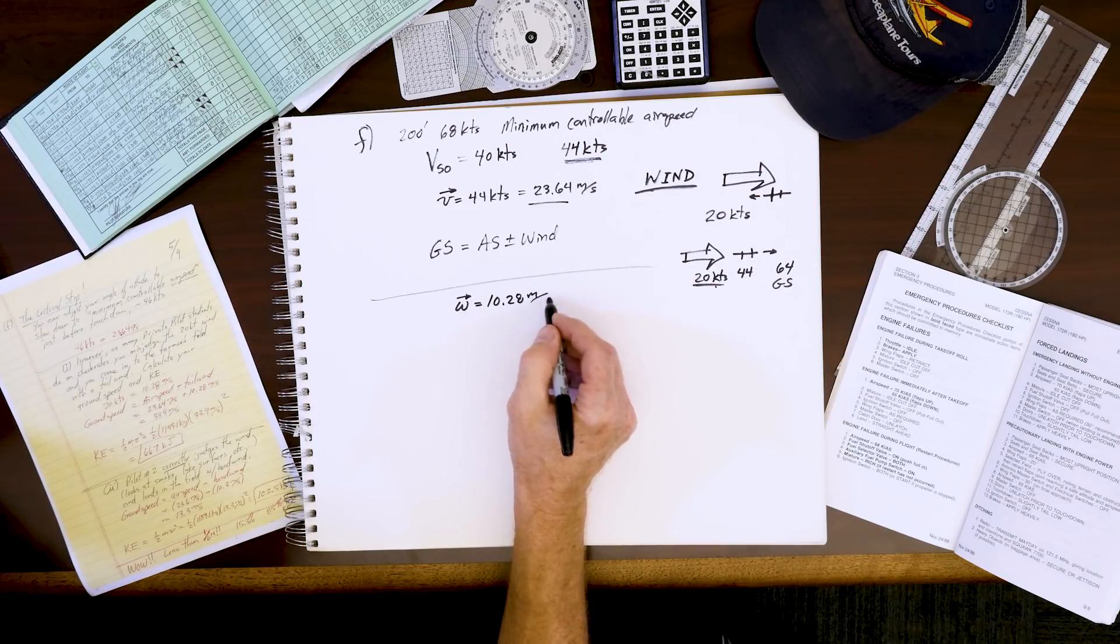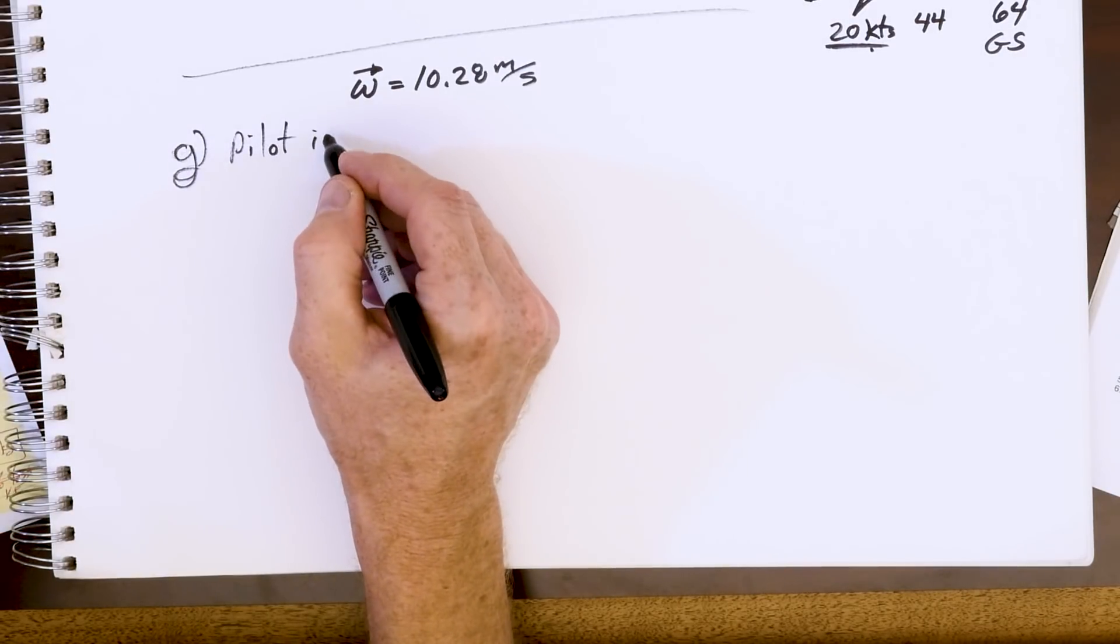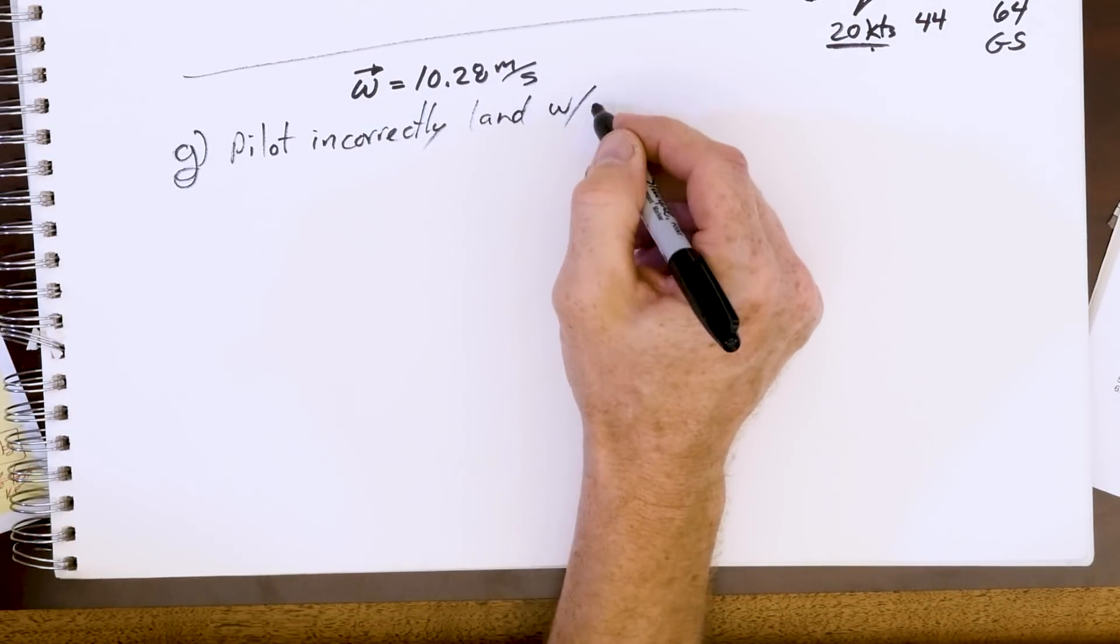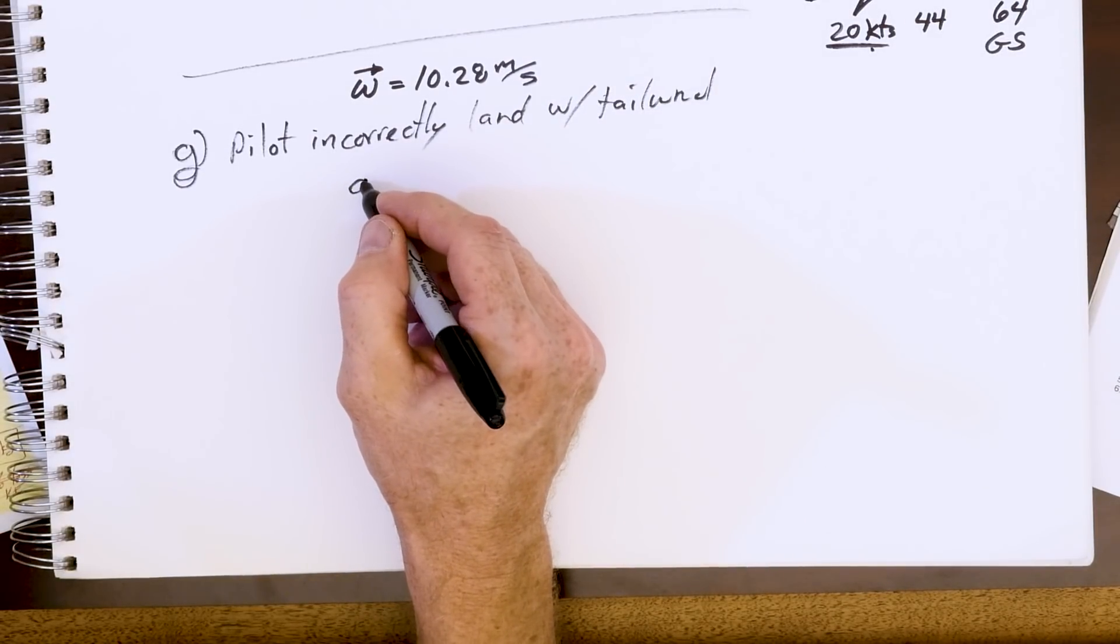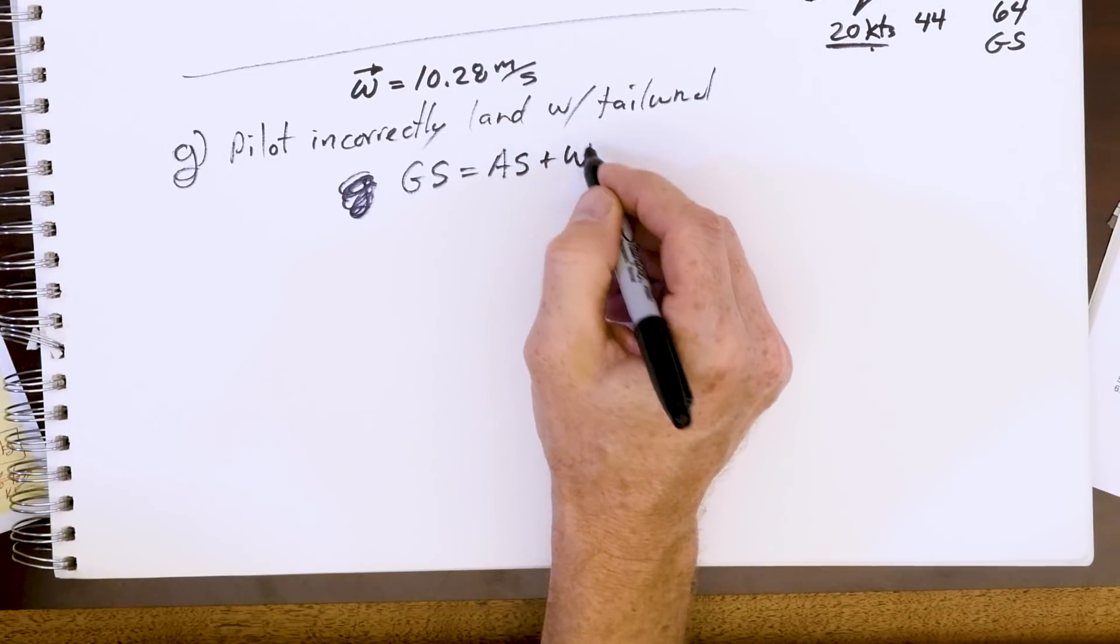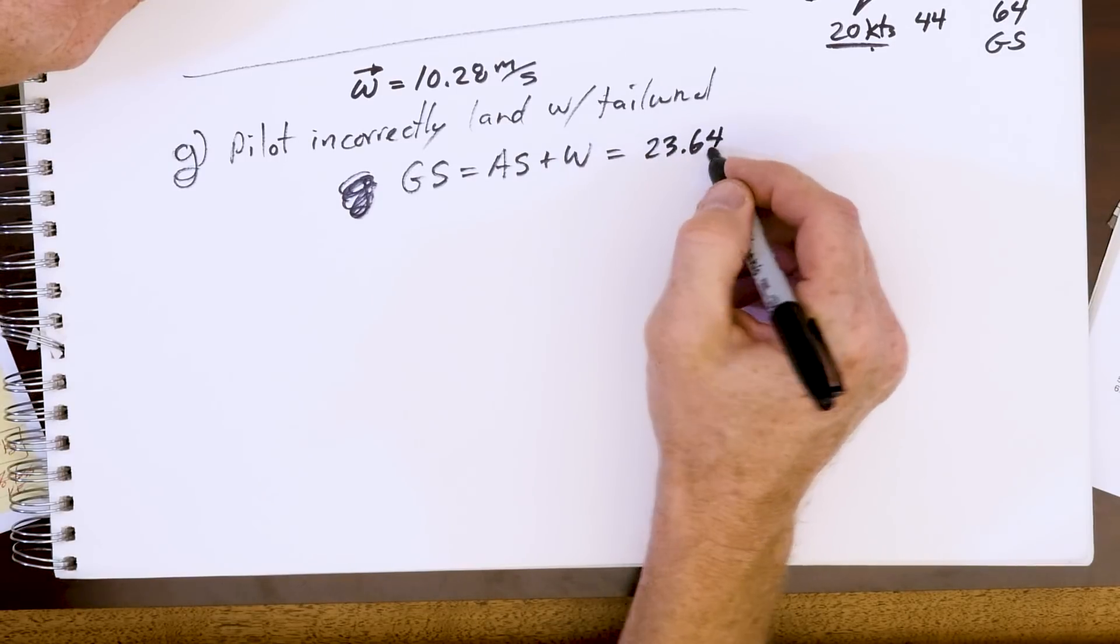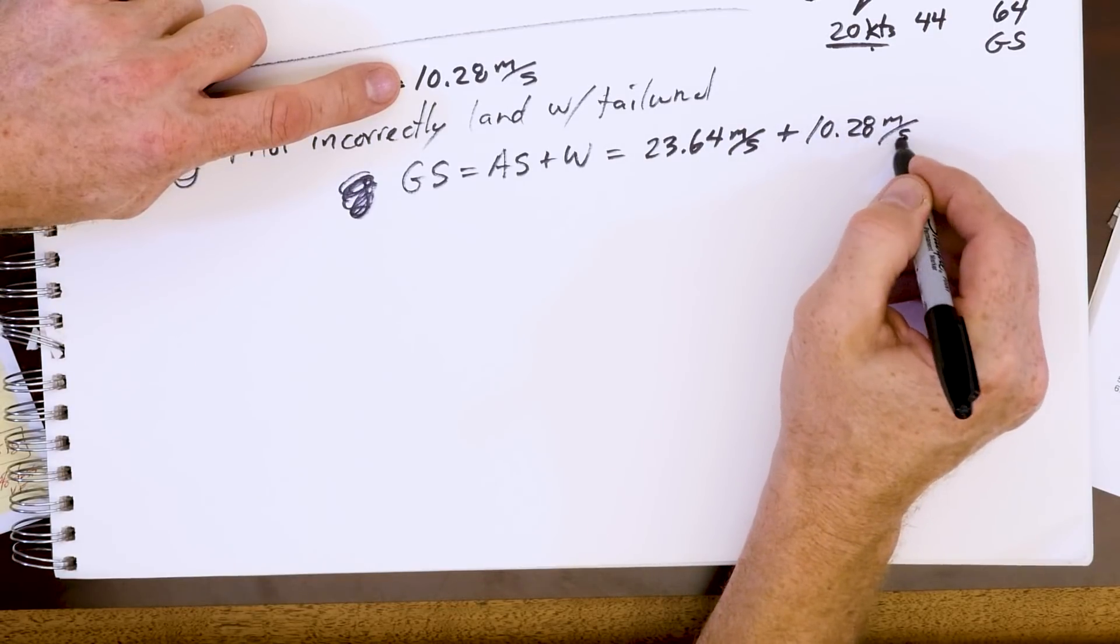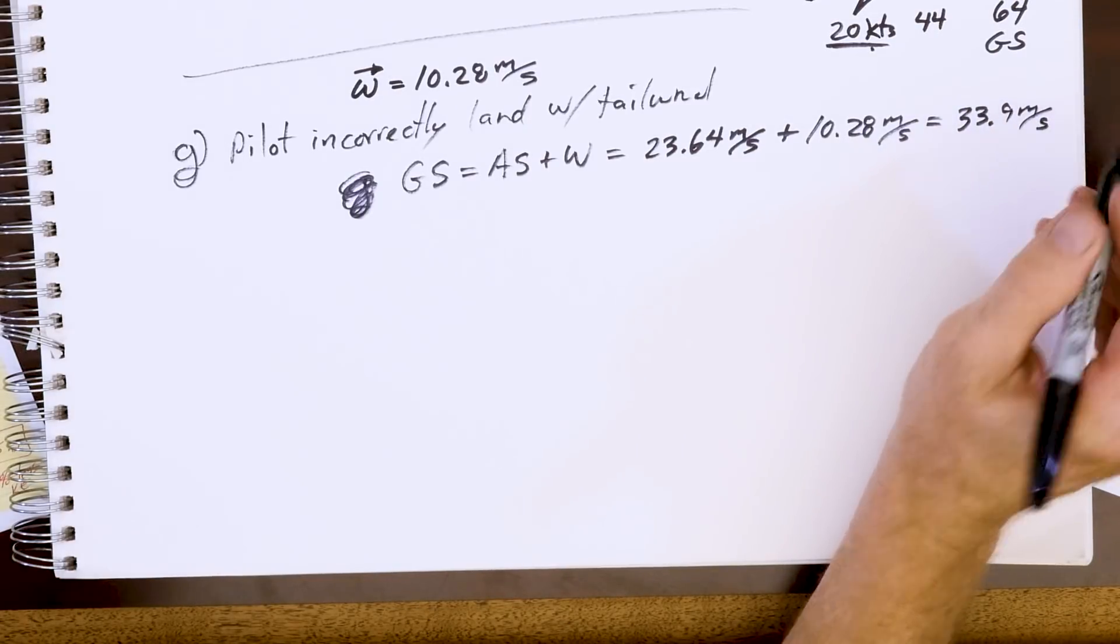Part G: the pilot incorrectly judges it and lands with a tailwind. So their ground speed (GS) equals the airspeed plus the wind. That's going to be, in metric units now, 23.64 meters per second plus our wind 10.28 meters per second. That comes out to be 33.9 meters per second.